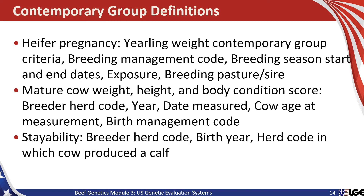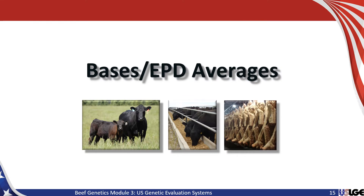For some of the reproductive traits, contemporary grouping becomes somewhat more difficult. Heifer pregnancy uses yearling weight contemporary group, breeding management code, breeding season start and end dates, exposure information — whether they were exposed to natural service sire or AI — as well as breeding pasture or sire group. Mature cow weight includes information about breeder herd code, the year, date measured, cow age at measurement, as well as birth management code and body condition score. For stayability, the contemporary group consists of breeder herd code, birth year, and herd code in which the cow produced a calf to weaning.